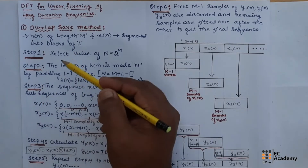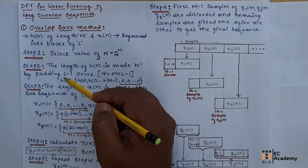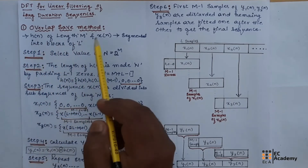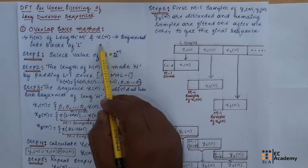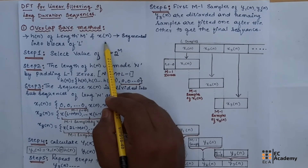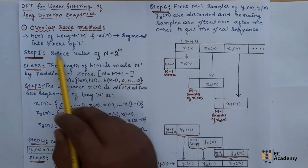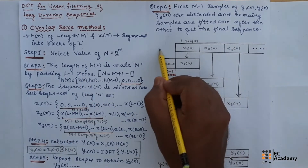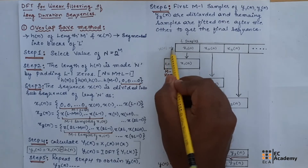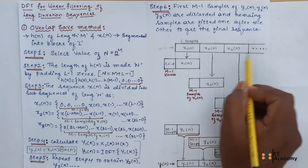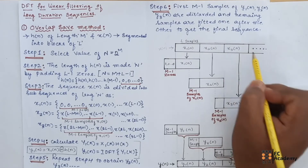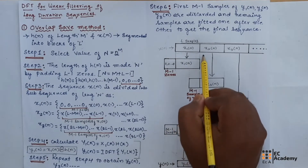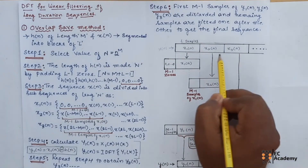Now let us see the different steps involved in the overlap-save method. Let us take the unit impulse response h(n) of length m and x(n), which is a long duration sequence. It will be segmented into blocks of length l. You can see here, this is x(n) — a long duration sequence — so it will be segmented into blocks of l number of samples, meaning each block will have l number of samples.